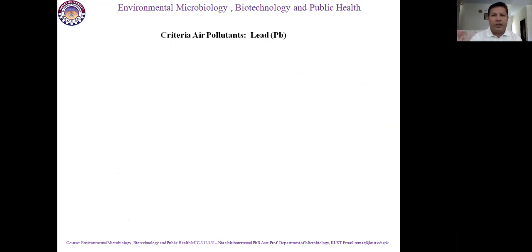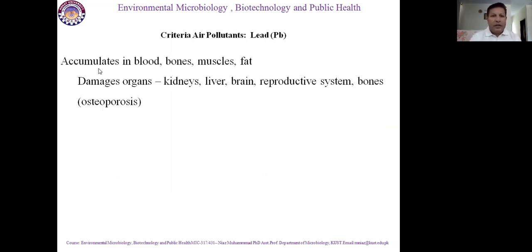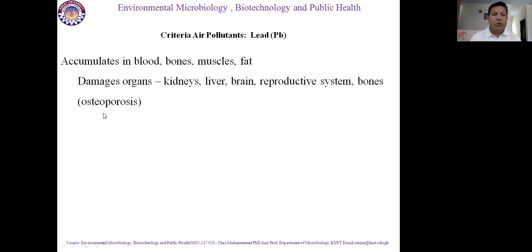Continuing on lead as an air pollutant: lead accumulates in blood, bones, muscles, and fat. It is absorbed just like calcium and consequently damages organs — kidneys, liver, brain, reproductive system, and bone. In bones, it causes osteoporosis. These are the negative effects of lead, and we should be careful that lead concentration does not go into the atmosphere.